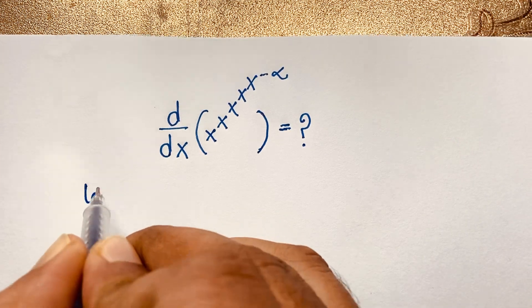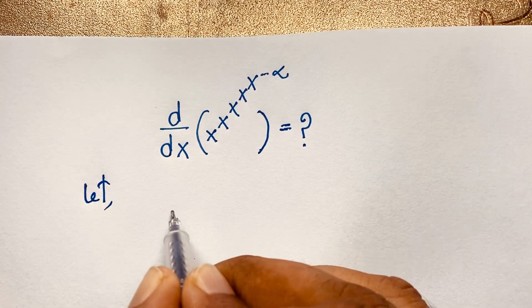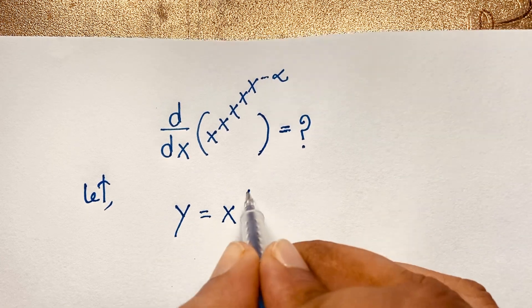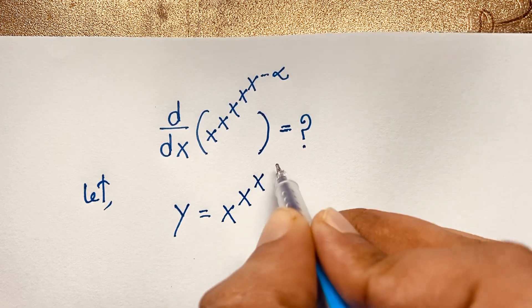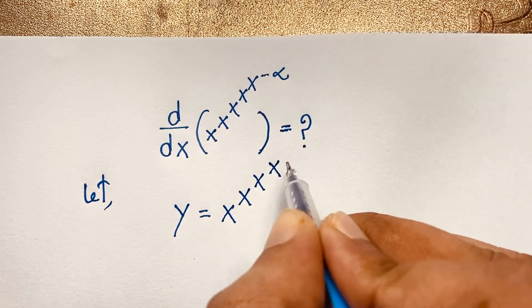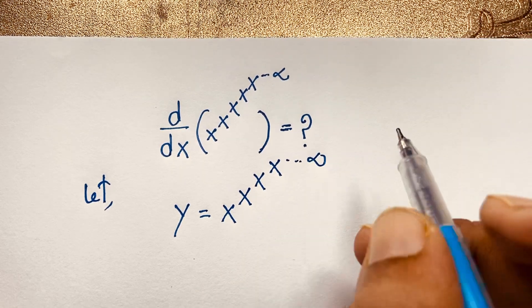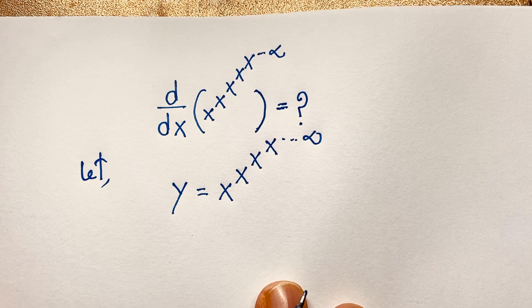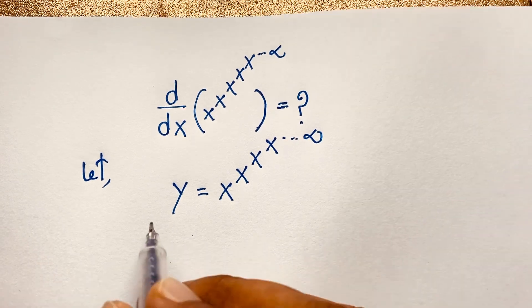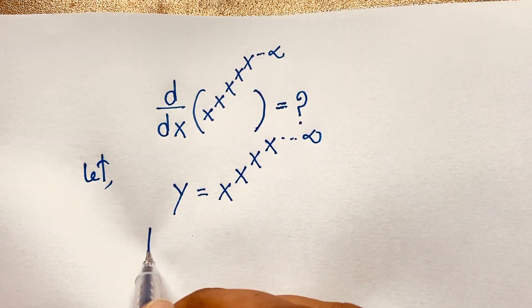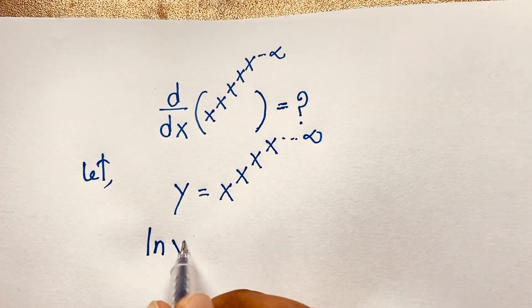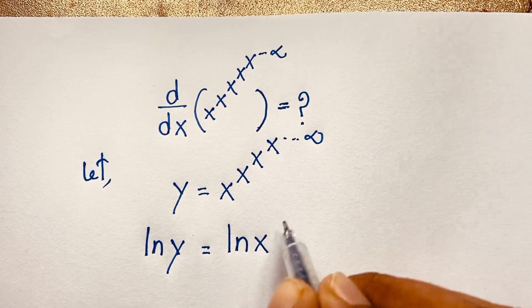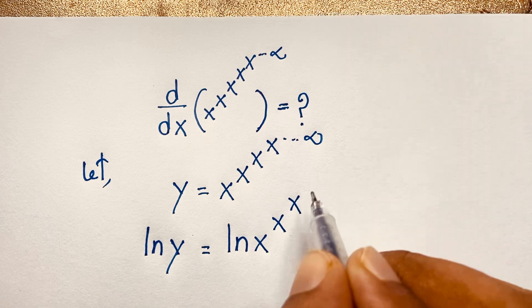First of all, let y equal to x to the power x to the power x — this continues to infinity. So let y equal to this expression. Then I apply the natural log to both sides, so ln y equals ln of x to the power x to the power x to the power infinity.